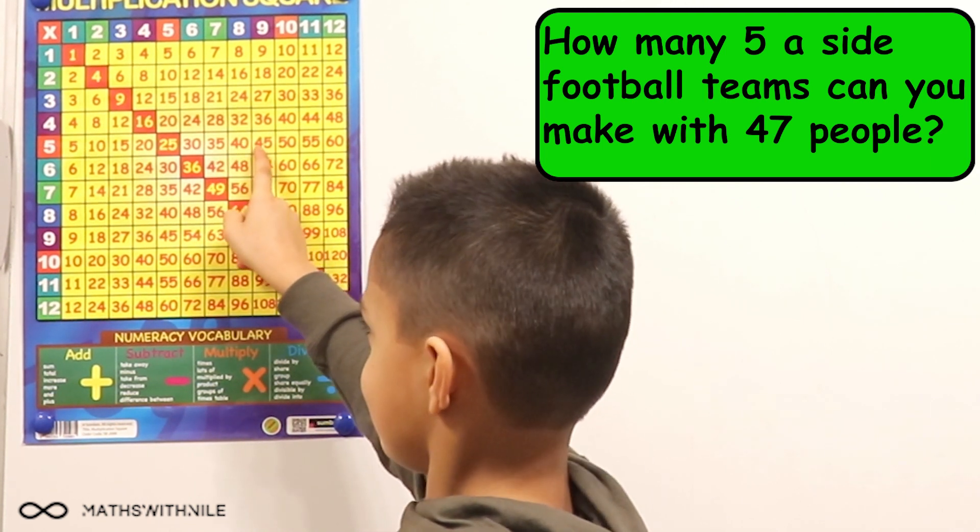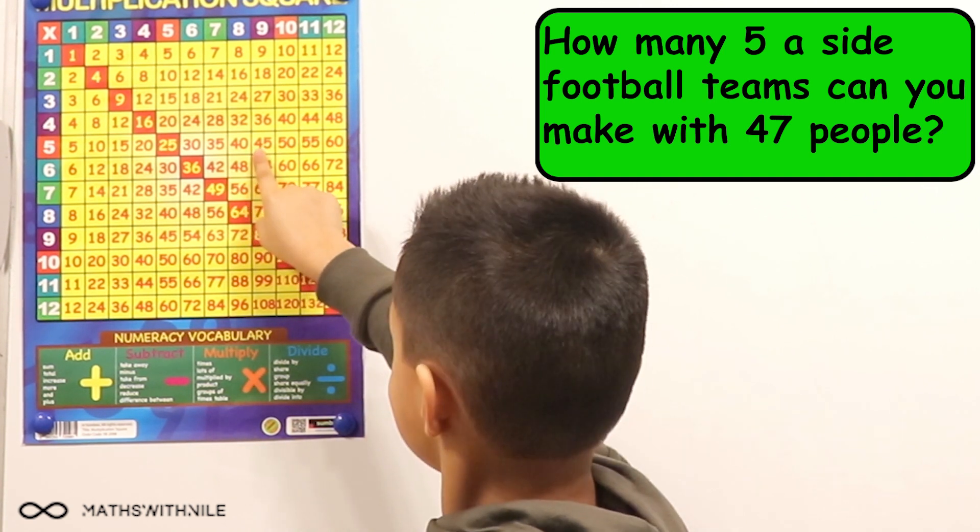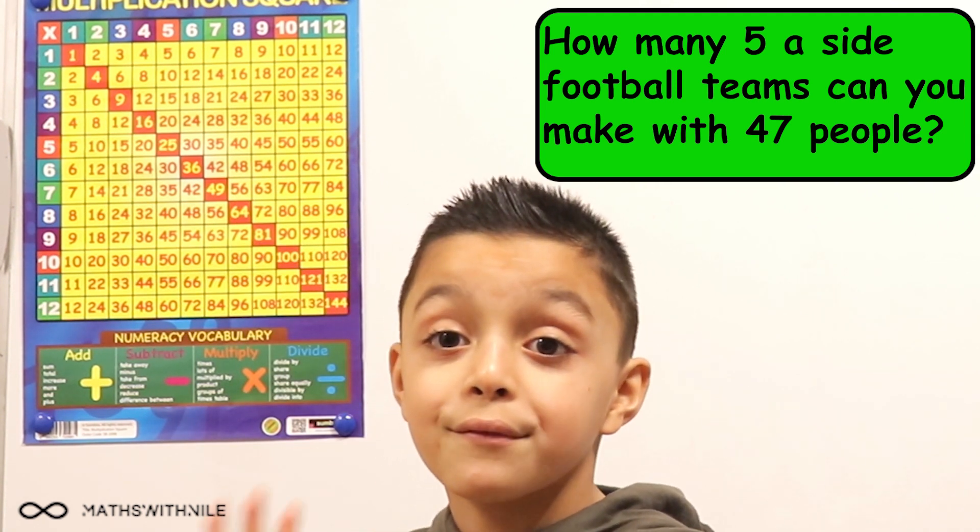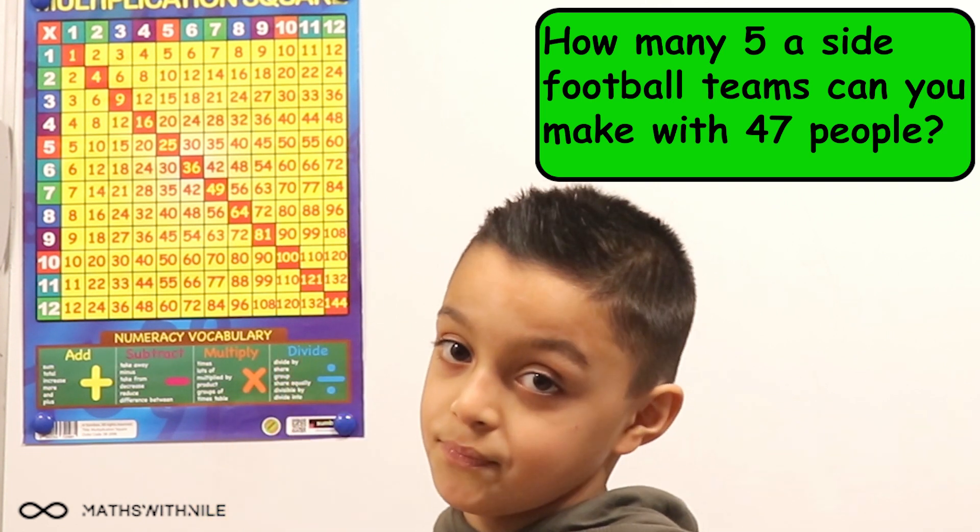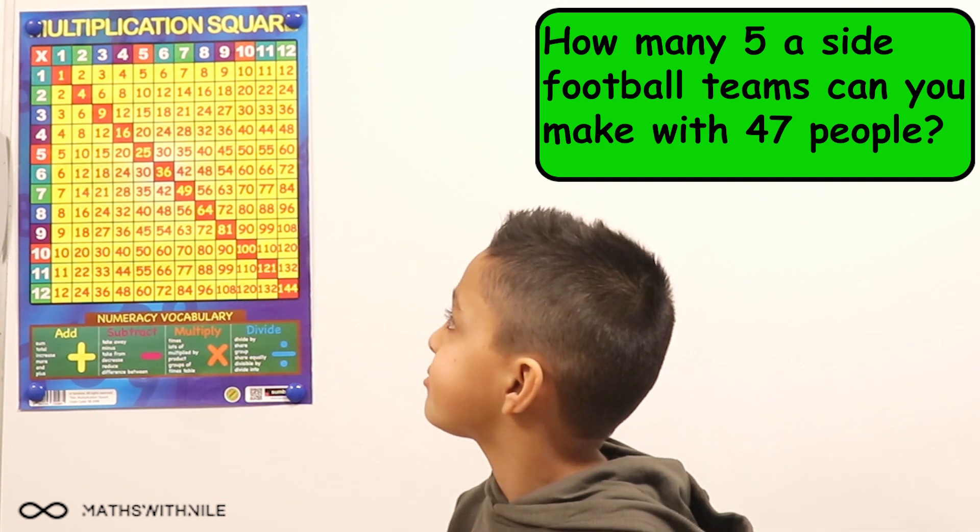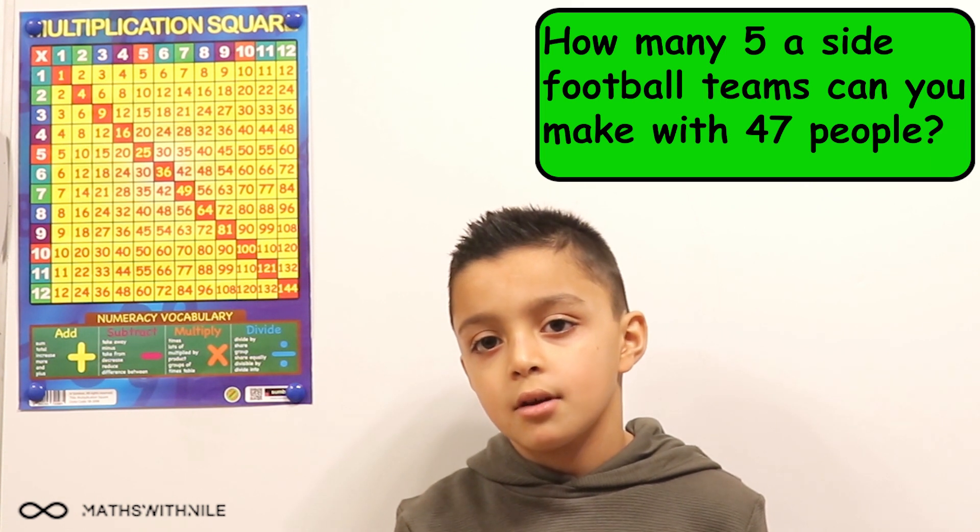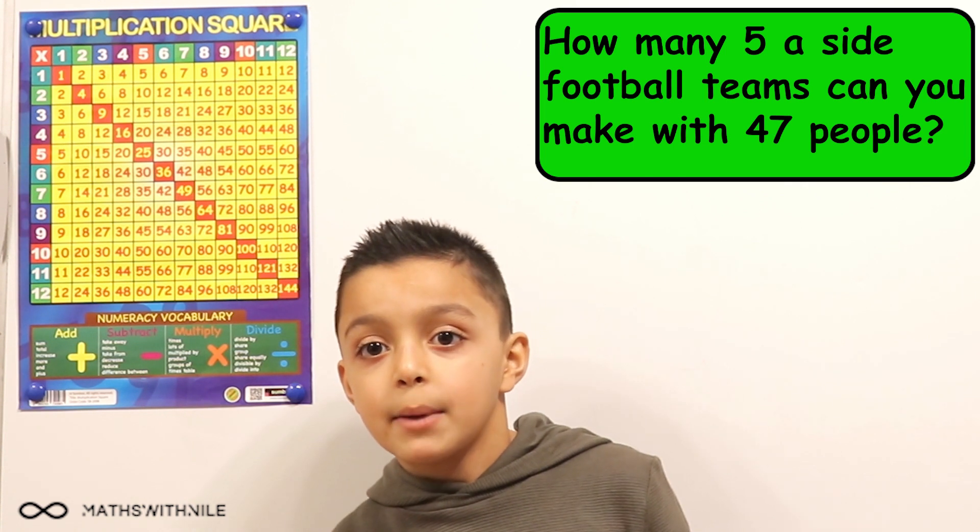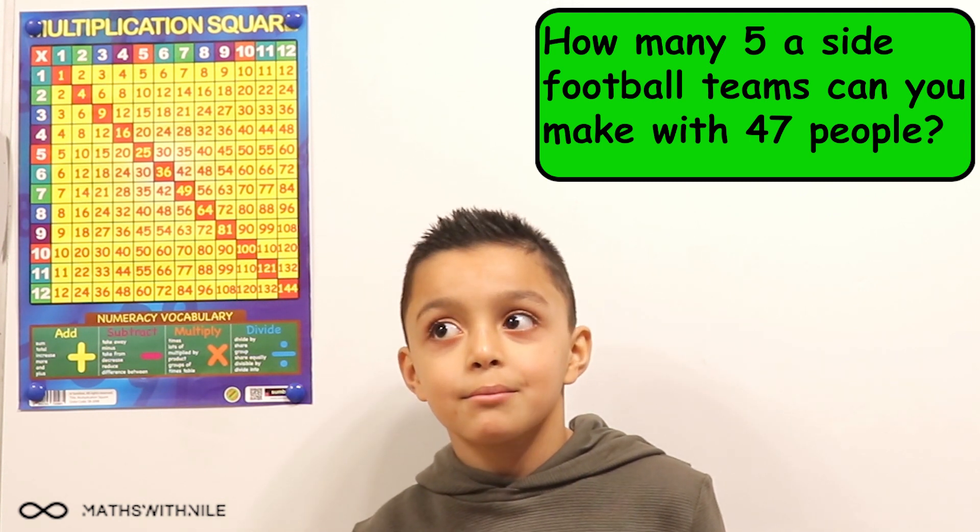And what number are you looking for? 47. So can you explain what you're seeing? There's no 47 because five's times table only ends in a five or a zero. Okay, so that's good to know. So what number does five go into that's close to 47? Forty-five. Oh yeah. Wait. So if we do 45, how many times does five go into 45? Yeah. And seven doesn't have two teams.